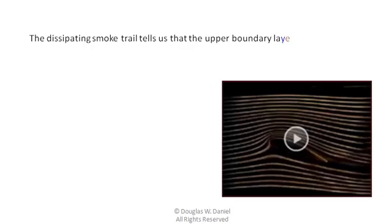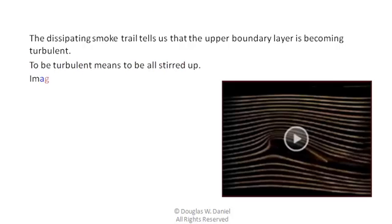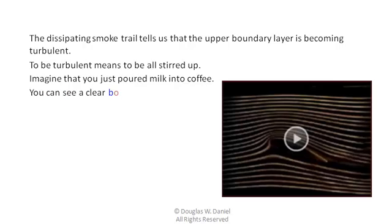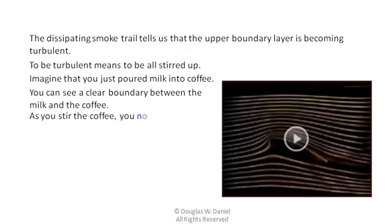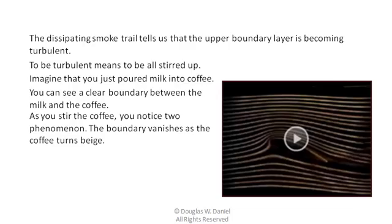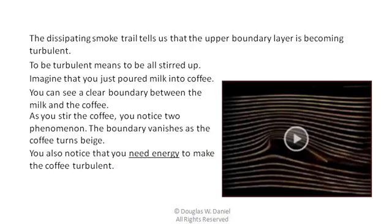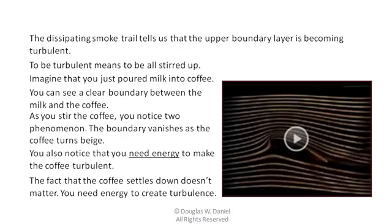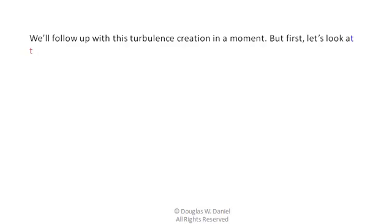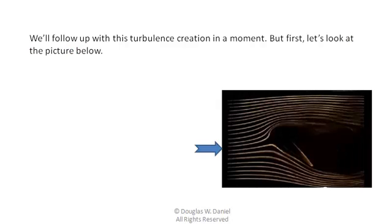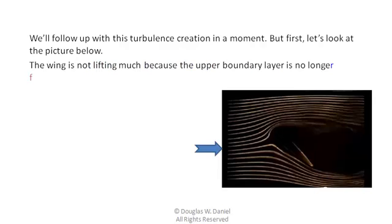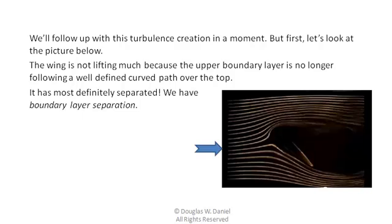The dissipating smoke trail tells us that the upper boundary layer is becoming turbulent — to be turbulent means to be all stirred up. Imagine that you just poured milk into coffee. You can see a clear boundary between the milk and the coffee. As you stir the coffee, the boundary vanishes as the coffee turns beige, and you notice that you need energy to make the coffee turbulent. You need energy to create the turbulence. Looking at the wing, it is not lifting much because the upper boundary layer is no longer following a well-defined curved path over the top. It has most definitely separated — we have boundary layer separation.